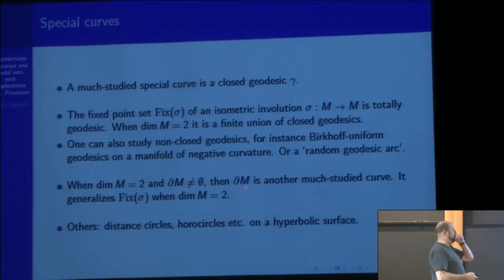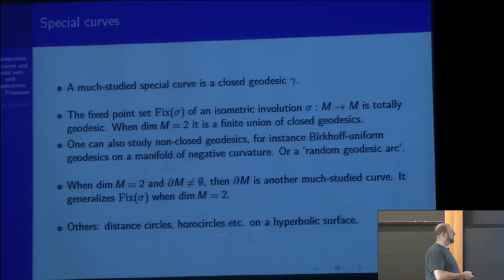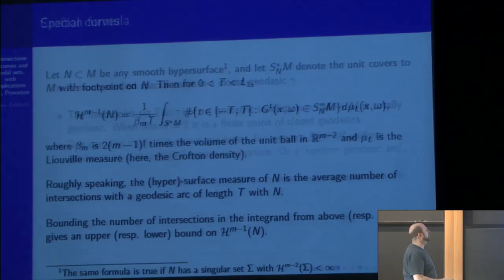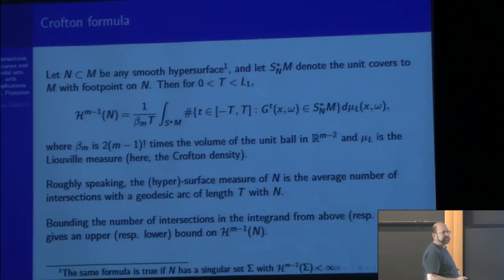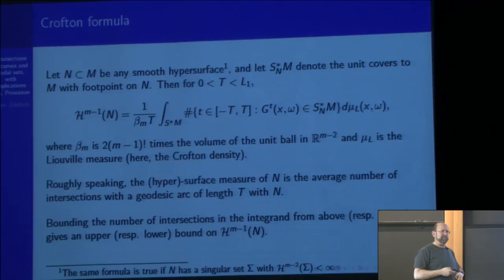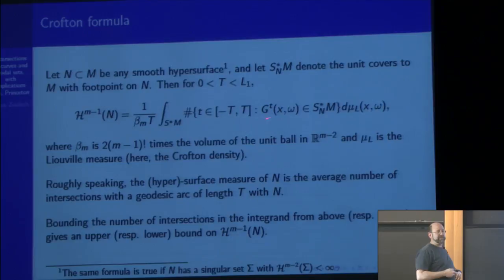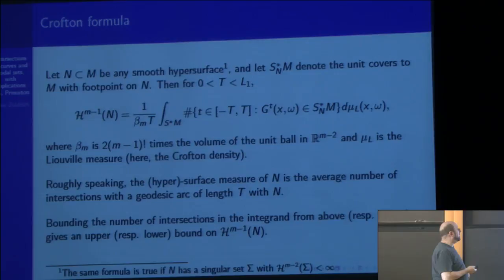In some sense, the reason people are able to get many of their results is that implicitly the curve they're studying can be viewed as the boundary, and the eigenfunctions satisfy a boundary condition on the curve. Jun Hyuk Jung has proved a number of results about the vanishing or goodness of eigenfunctions on various types of important curves. So why are curves considered fundamental? Every previously proved upper bound on the volume of nodal sets has used Crofton's formula.